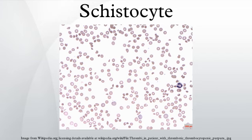A schistocyte or schizocyte is a fragmented part of a red blood cell. Schistocytes are typically irregularly shaped, jagged, and have two pointed ends. A true schistocyte does not have central pallor. Schistocytes are sometimes referred to as helmet cells.